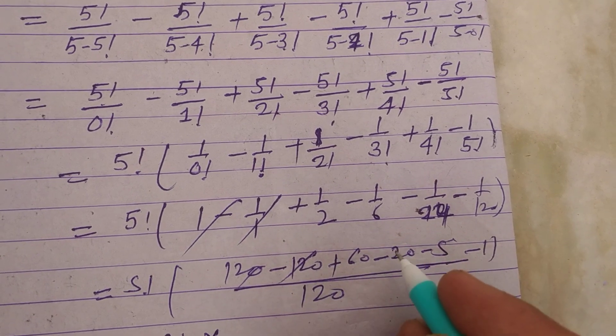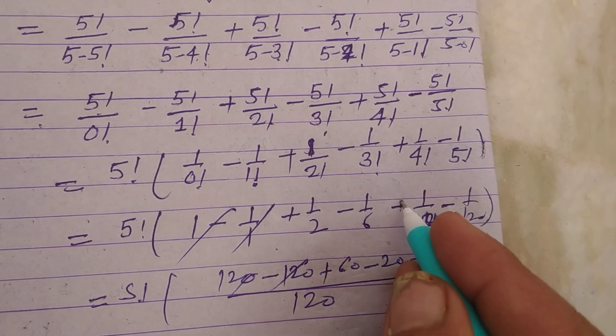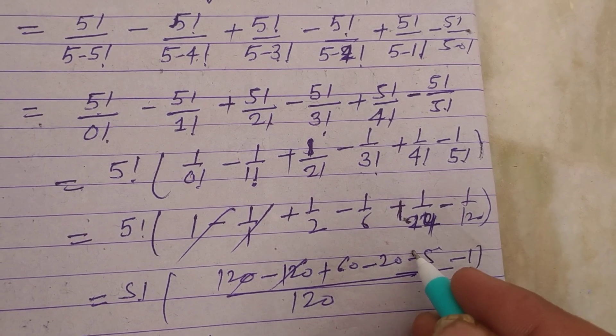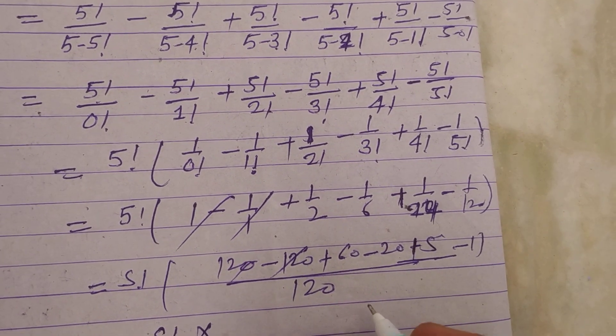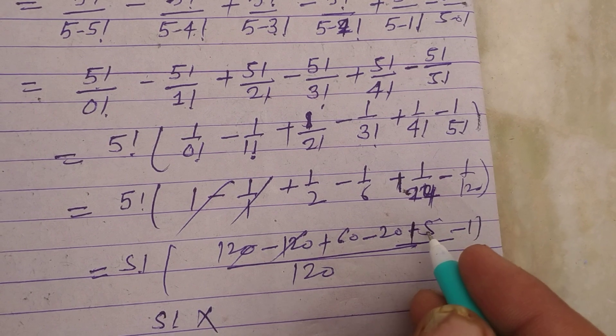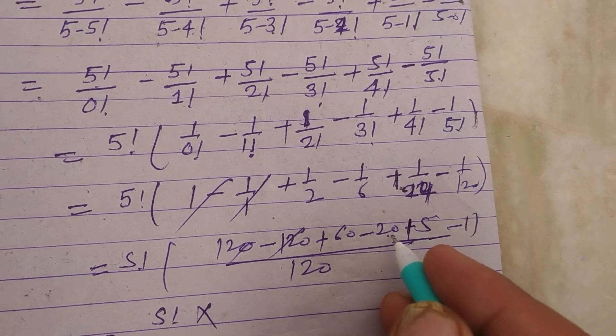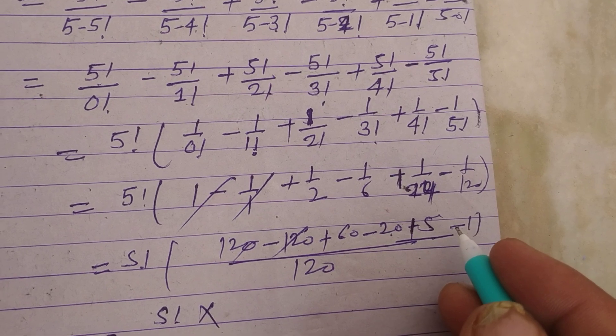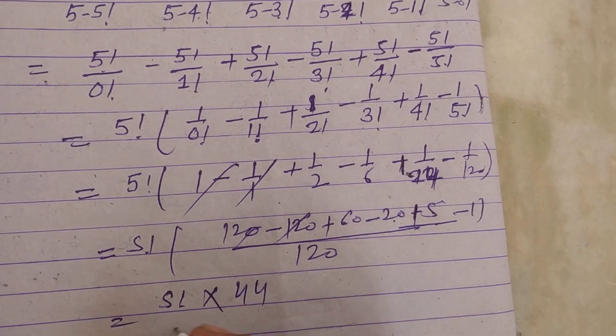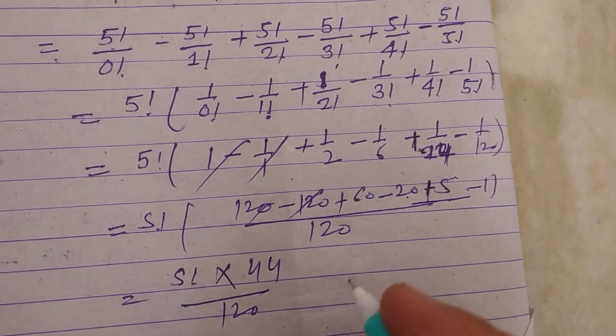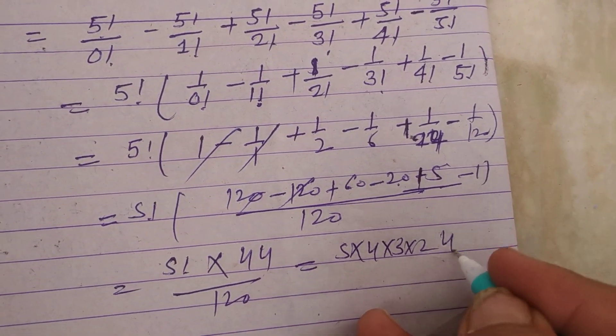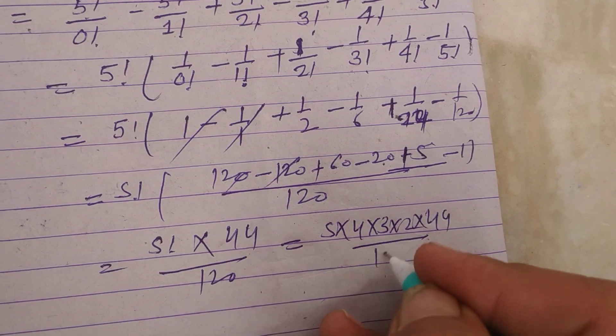This is 60 and minus this is plus, so 60 minus 20 is 40, plus 5 is 45, minus 1 is 44 upon 120. So 5 times 4 times 3 times 2 times 44 upon 120.